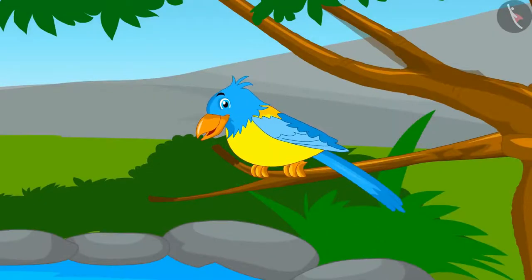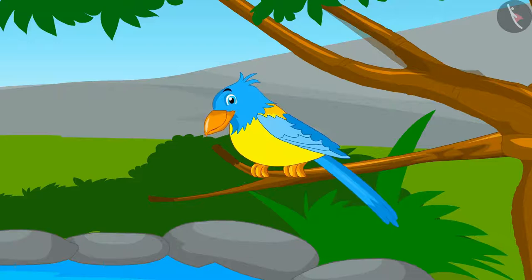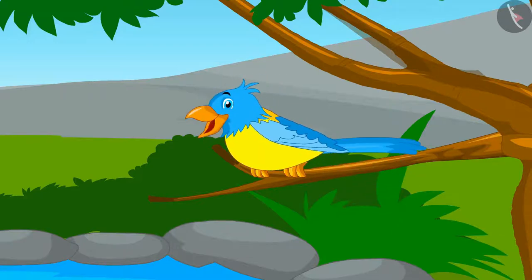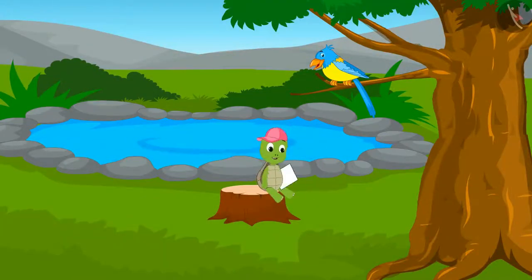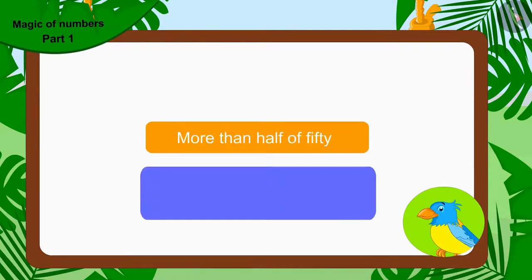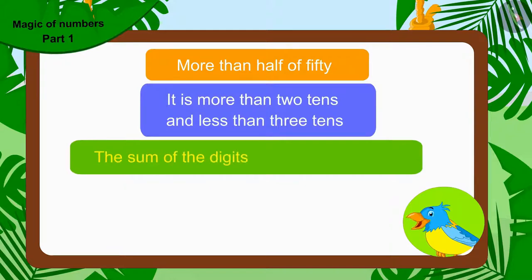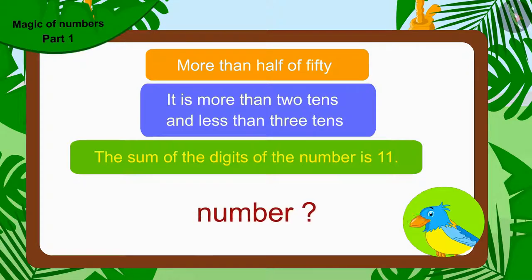Okay, listen to my puzzle carefully. I have thought of a number. And you have to find that number by using some hints. Are you ready? The bird said to Tufan. Tufan immediately took a pen and paper saying, I am all set. The number I have thought of is more than half of 50. It is more than two tens and less than three tens. The sum of the digits of the numbers is 11. Now tell me, which number am I thinking of?